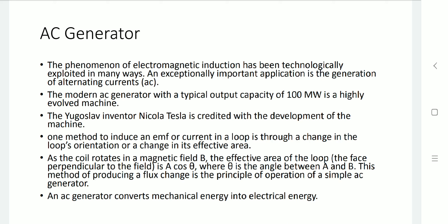If we rotate a coil in a fixed magnetic field B, the effective area of the loop is A cos(theta), where theta is the angle between A and B. While we rotate it, theta is going to change, which produces a change in the flux to generate the AC current. That is what is utilized for the AC generator. Basically, an AC generator converts mechanical energy into electrical energy.